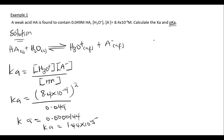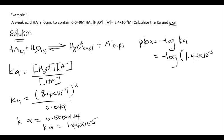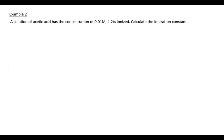For the second part, pKa = −log(Ka). So pKa = −log(1.44 × 10⁻⁵) = 4.84. Therefore, the Ka of acid HA is 1.44 × 10⁻⁵ and the pKa is 4.84.